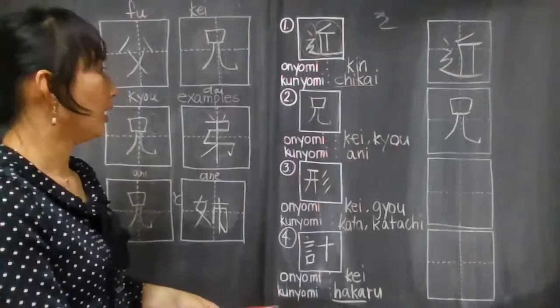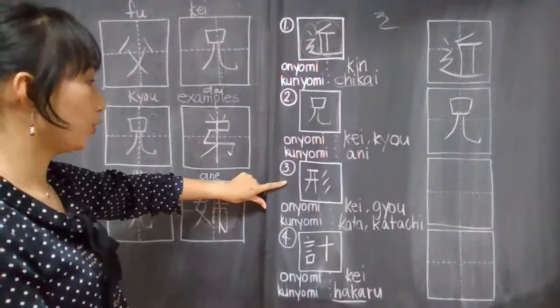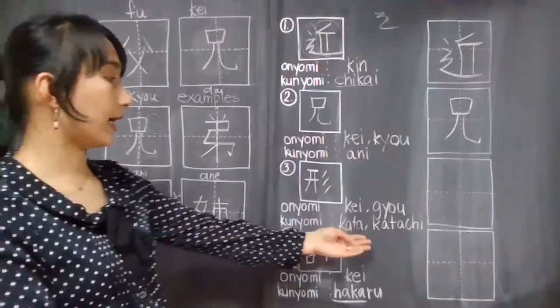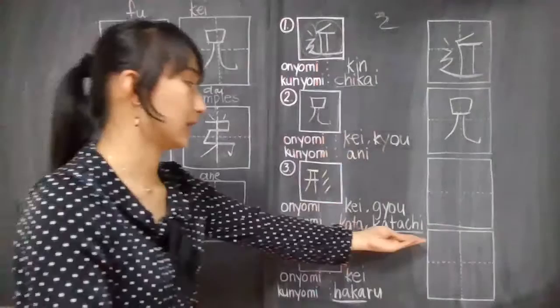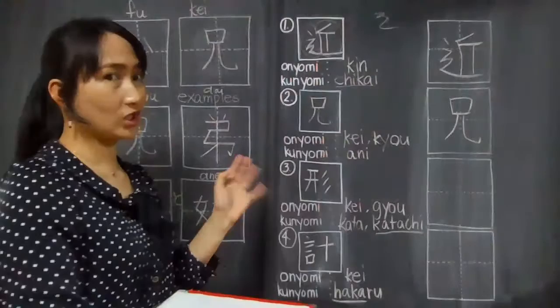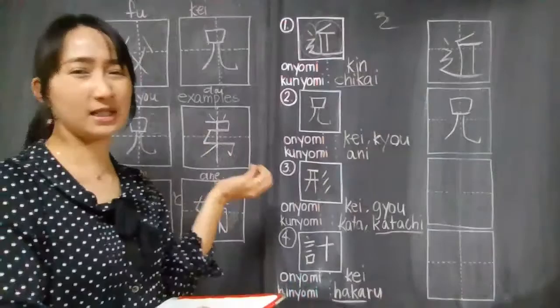So we are done with our second kanji. Our next one is this. Its onyomi are kei and gyo, and its kunyomi are kata or katachi. Katachi, the meaning is shape. So guys, when you see this kanji alone, the reading is katachi, which means shape. Donna katachi ga suki desu ka? What shape do you like? I don't like this shape.